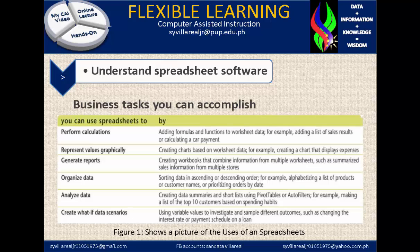Or prioritizing order by date. Next, analyze data by creating data summaries and short lists using pivot tables or auto filters. For example, making a list of the top 10 customers based on spending habits.